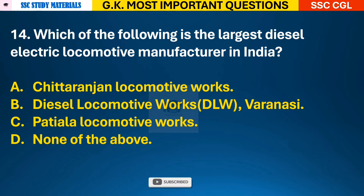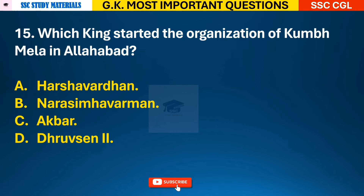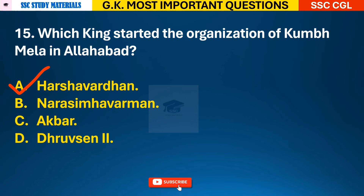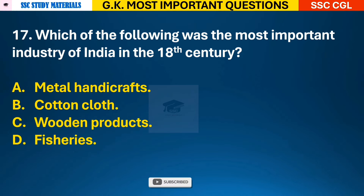Question 13: What is the name for the fertile tracts in the plains of Rajasthan? Answer D - it is known as Rohi. Question 14: Which of the following is the largest diesel electric locomotive manufacturer in India? Answer B - Diesel Locomotive Works, which is in Varanasi. Question 15: Which king started the organization of Kumbh Mela in Allahabad? Answer A - it was Harsha Vardhan.